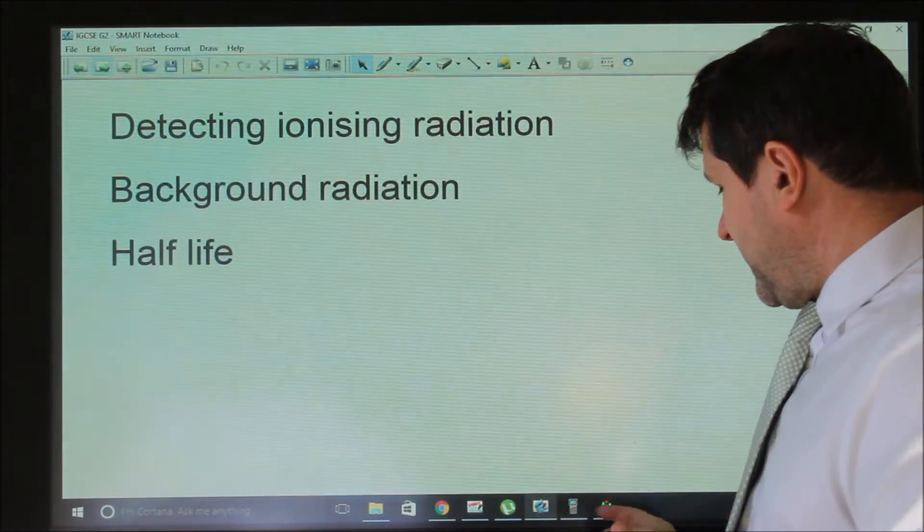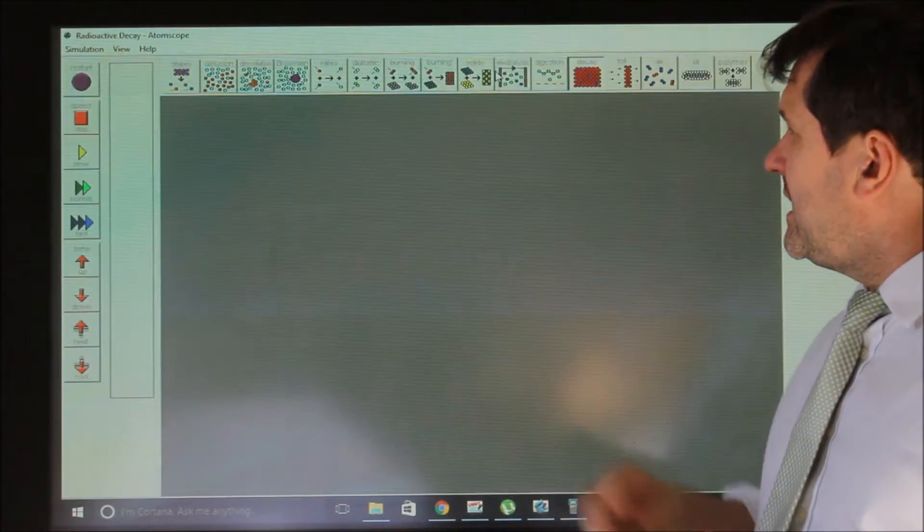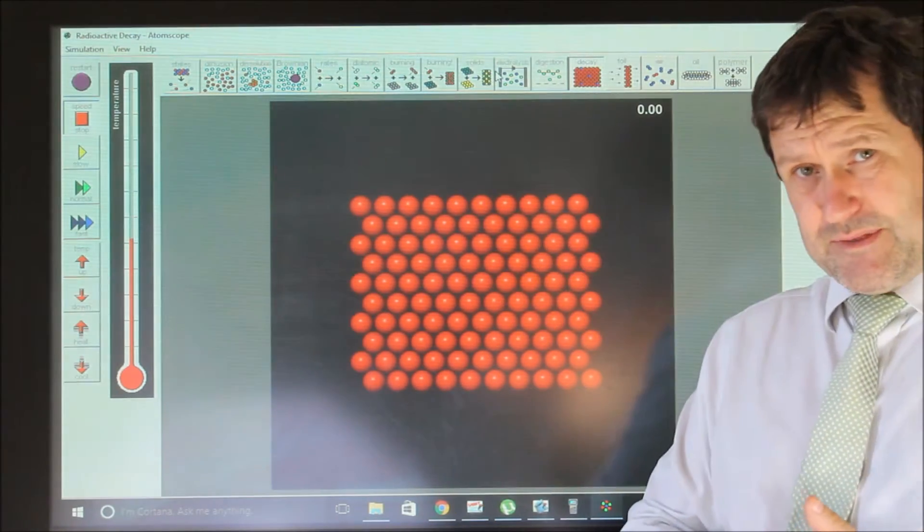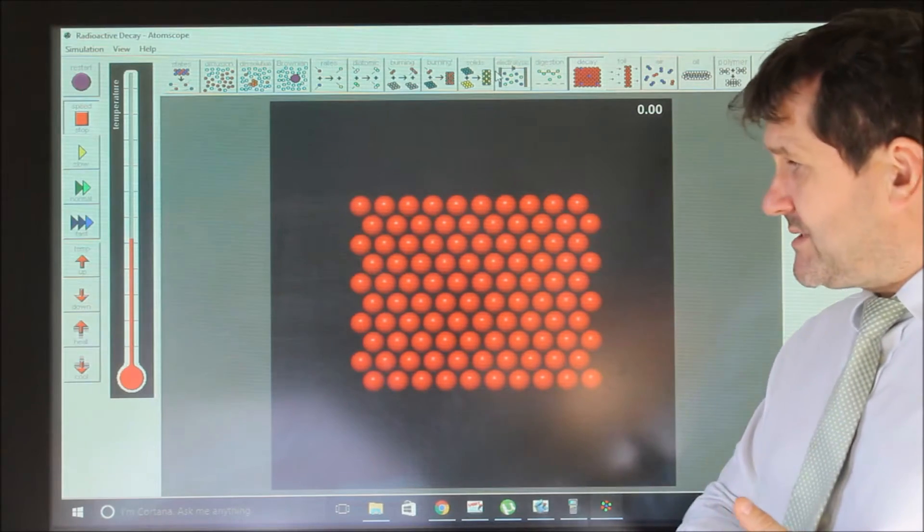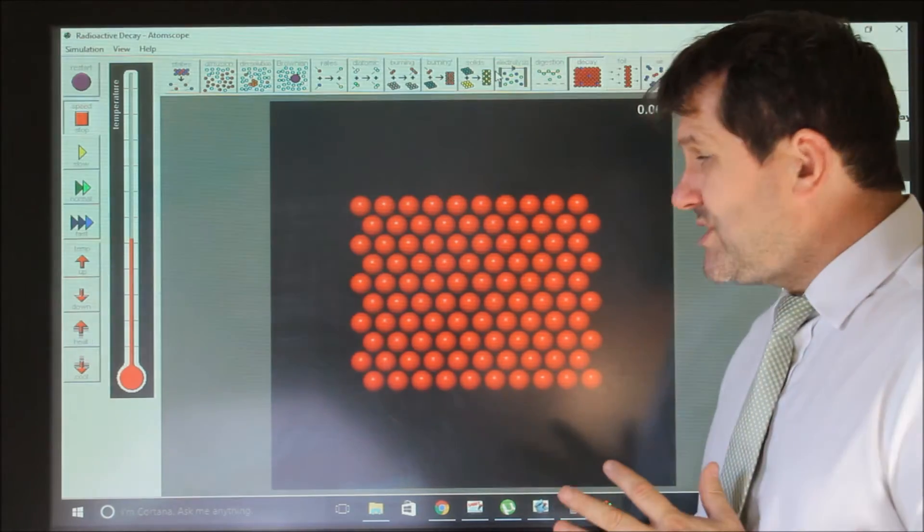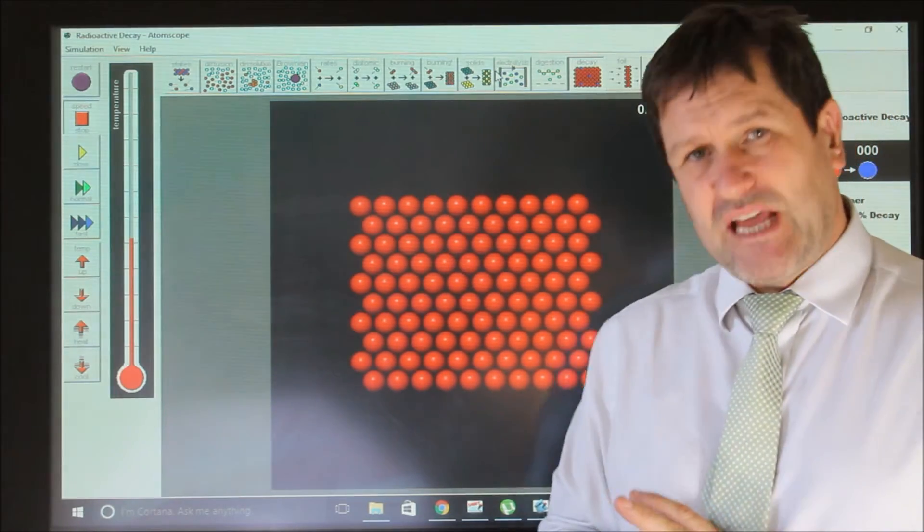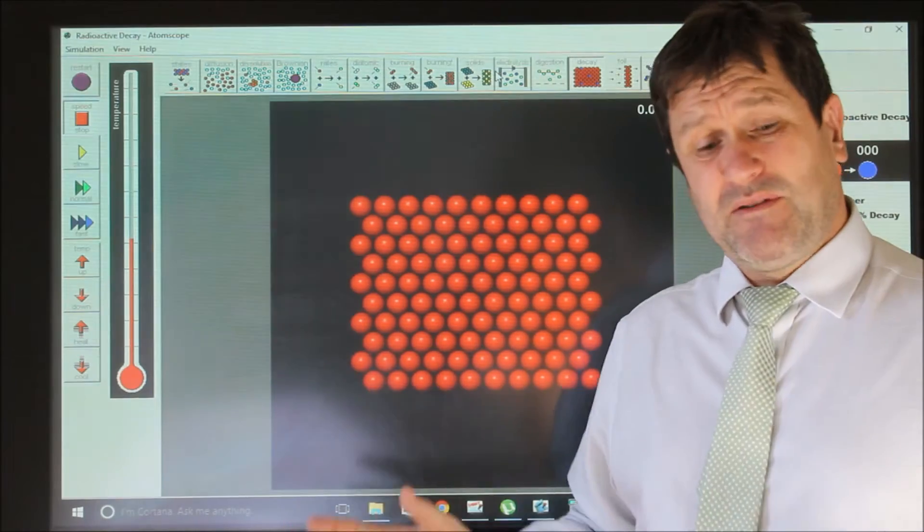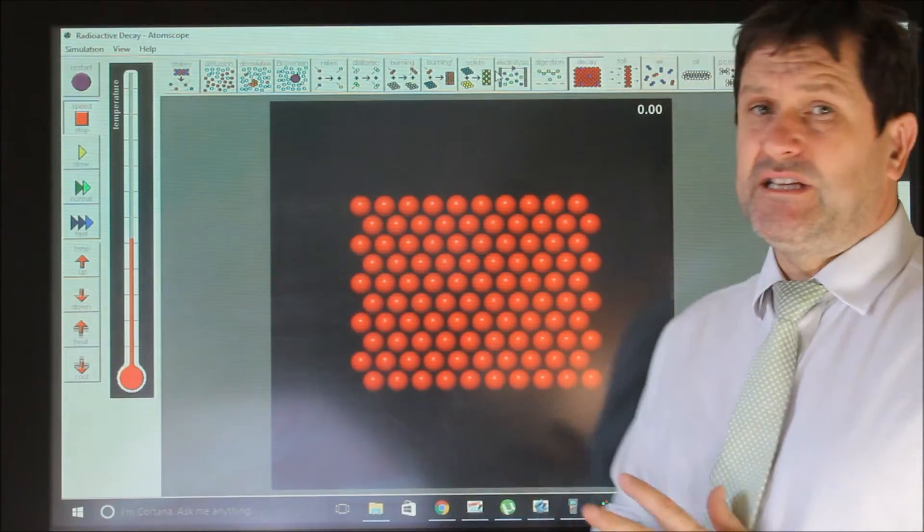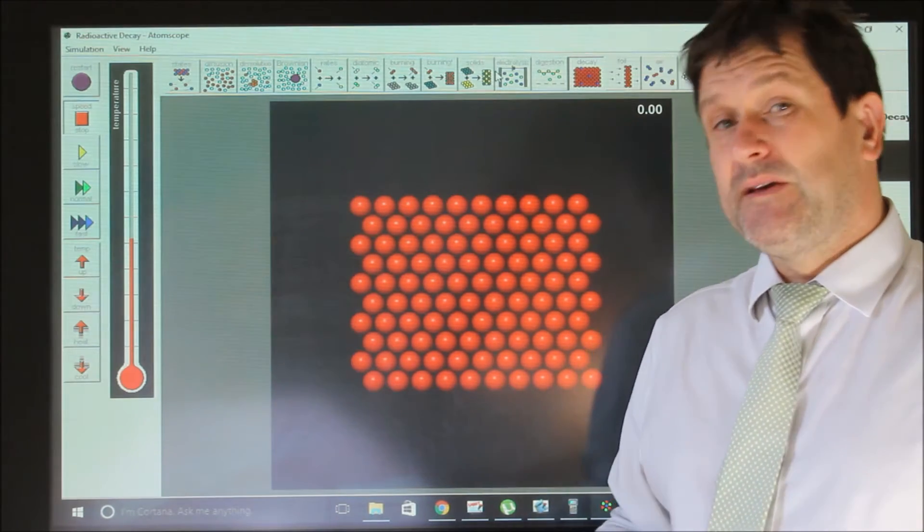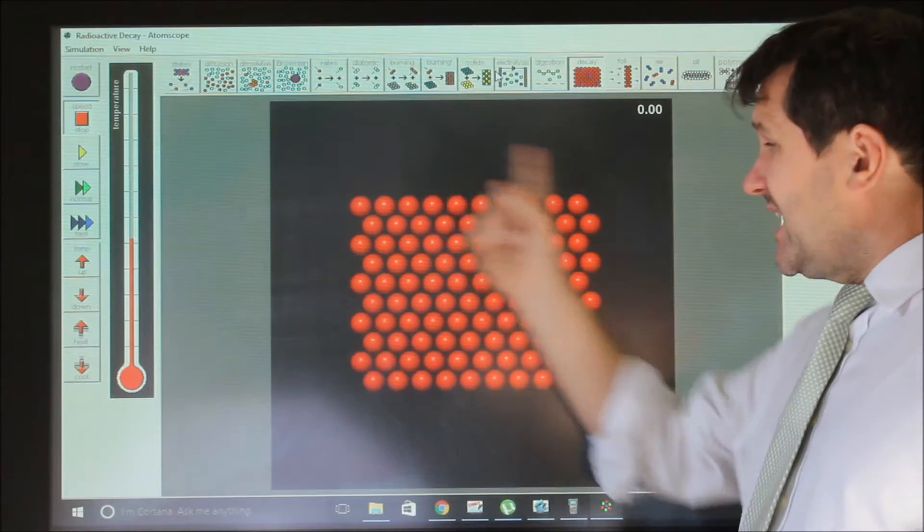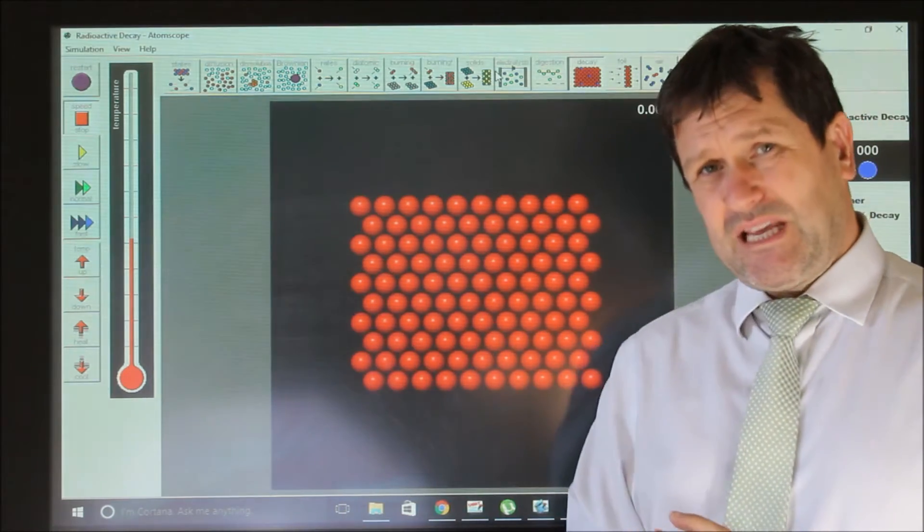Now, half-life is very important. Let me talk you through it. If we think about a sample here, we've got a sample of a hundred red atoms. The hundred red atoms are going to decay. We know that decay is caused because nuclei are unstable. It's a spontaneous random event, and we can never predict when any of these particular nuclei will decay.